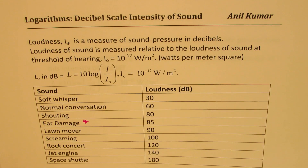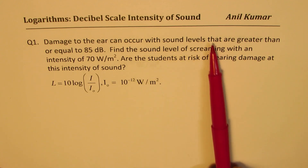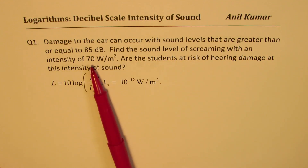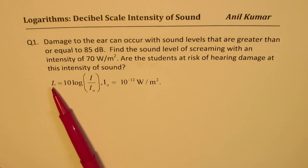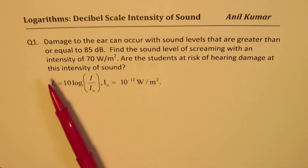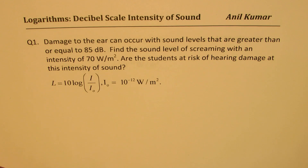We'll have two questions now. We'll see how to calculate intensity and also how to compare loudness. The first question: damage to the ear can occur with sound levels greater than or equal to 85 decibels. Find the sound level of screaming with an intensity of 70 watts per meter square. We are given the intensity I of screaming and need to find L, the decibel value. Are the students at risk of hearing damage? They will be if the decibel value is more than 85.